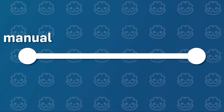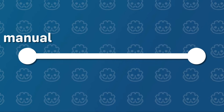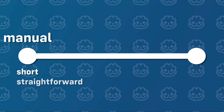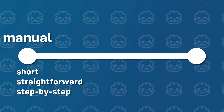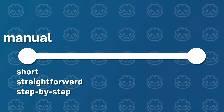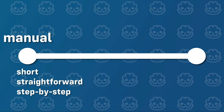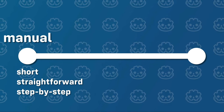I think we can put all tutorials on a spectrum. On the left hand, we have what I call a manual tutorial or a step-by-step tutorial. These are very short, straightforward, and explain a step-by-step process of recreating a feature or a whole game. They are kind of like IKEA furniture manuals.